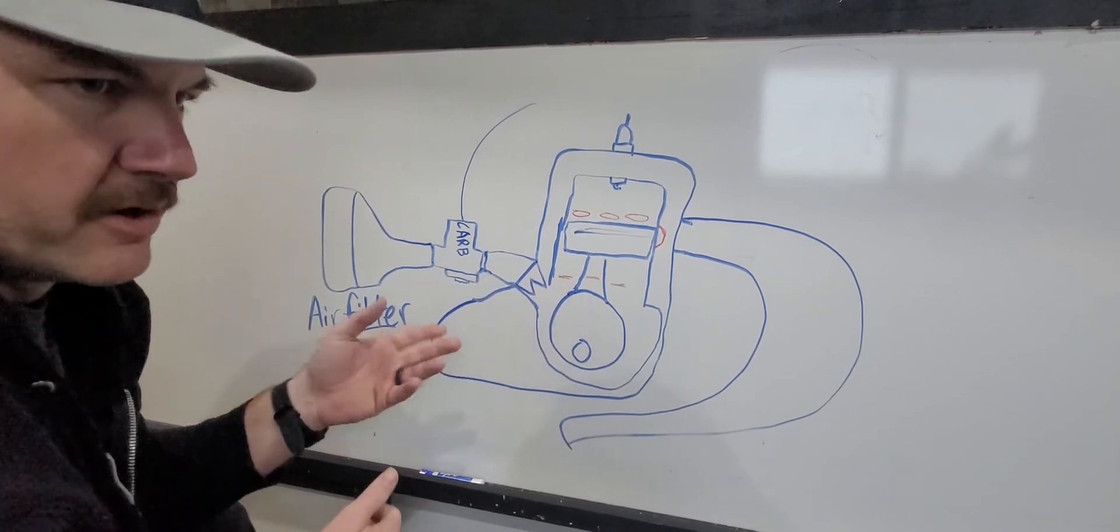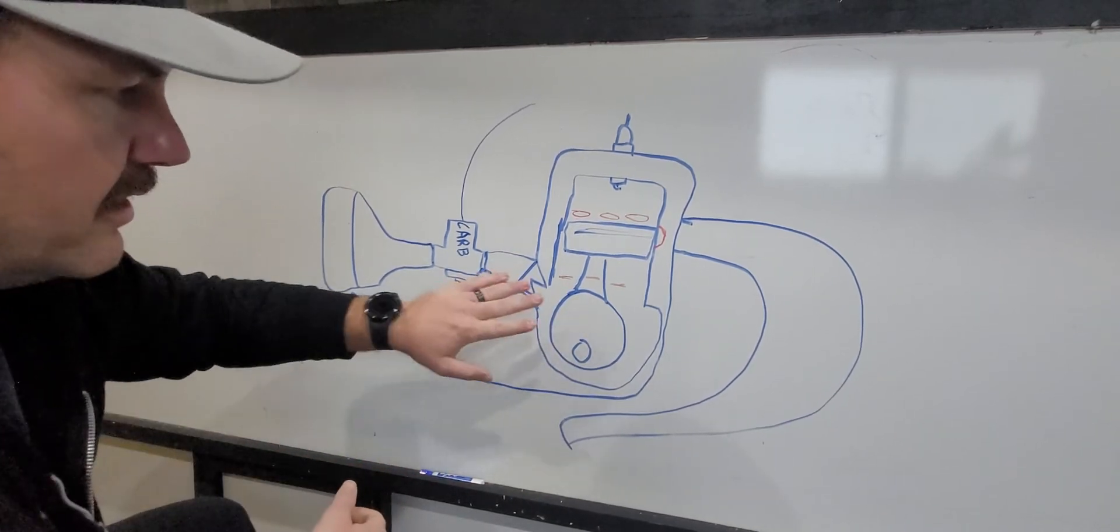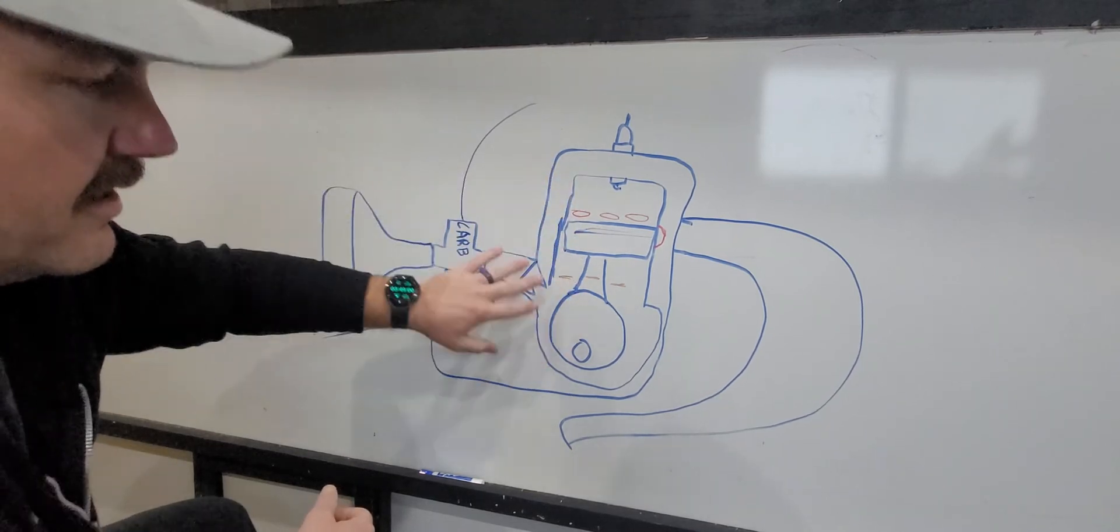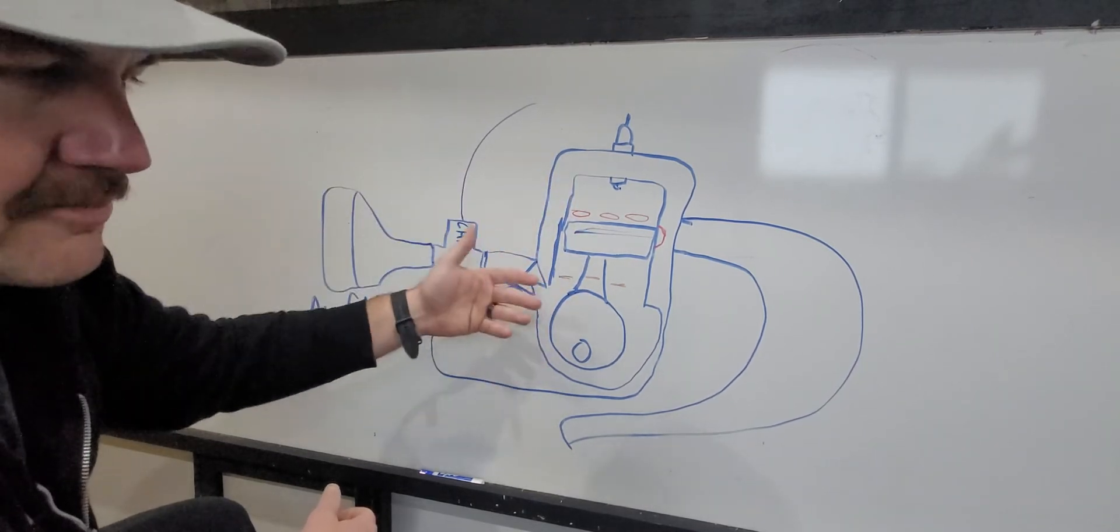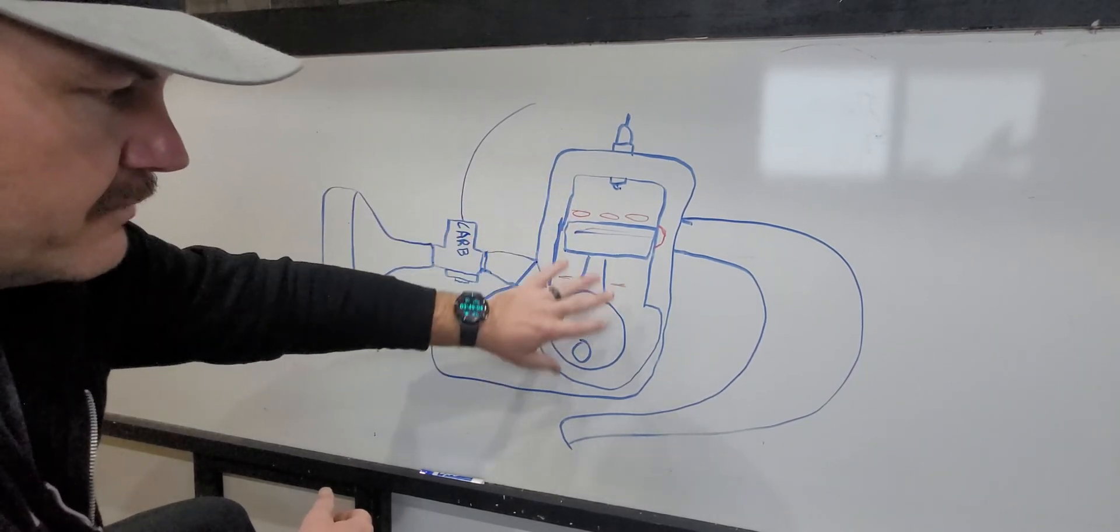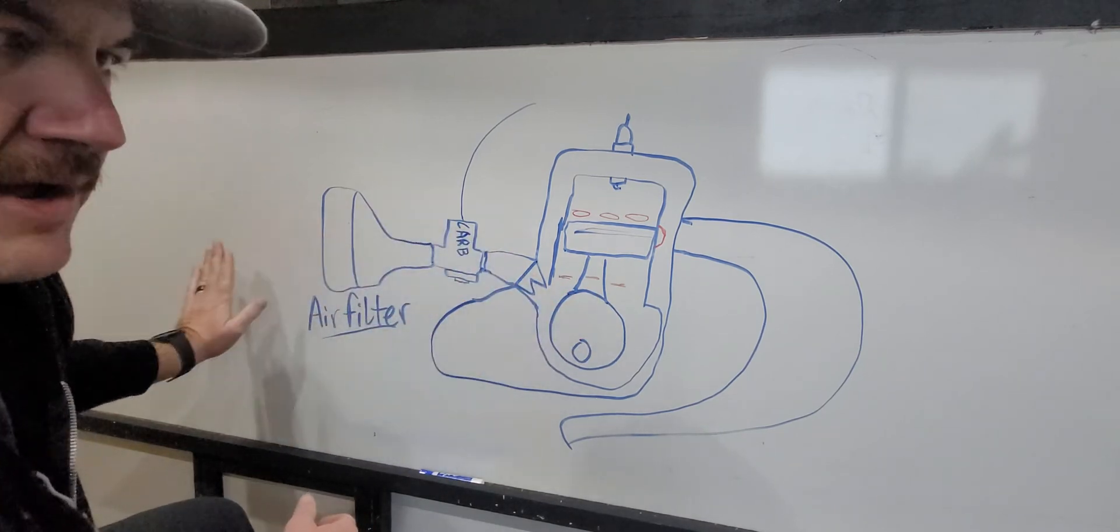But if you've been curious what a reed valve is actually doing, it's just regulating air. This is basically an air compressor, but it's keeping it from blowing back this way.